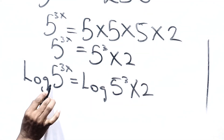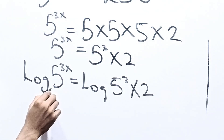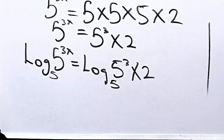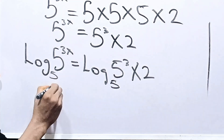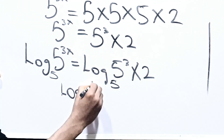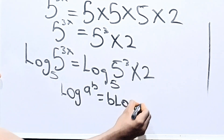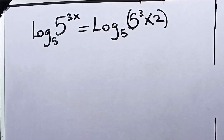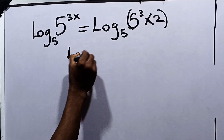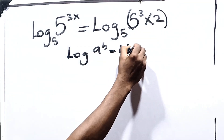If you look closely, you would see that we are going to use the logarithm in the base of the number carrying x. The number carrying x is 5, so the logarithm is base 5 on both sides. Recall the logarithm of a raised to the power b is equal to b multiplied by log of a.